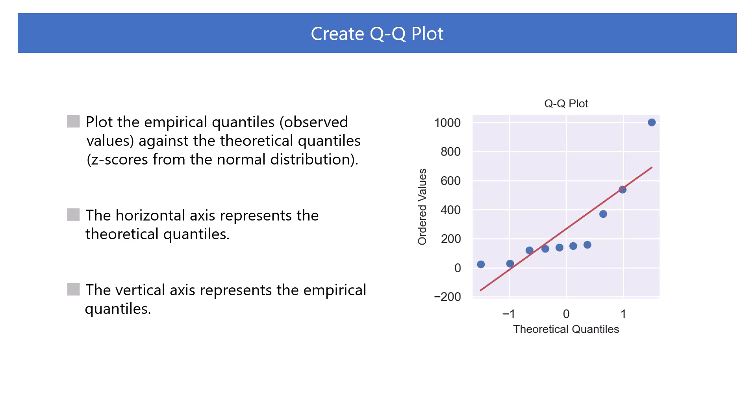To create a Q-Q plot, we plot the empirical quantiles against the theoretical quantiles. That is, observed values against z-scores from the normal distribution. The horizontal axis represents the theoretical quantiles. The vertical axis represents the empirical quantiles.